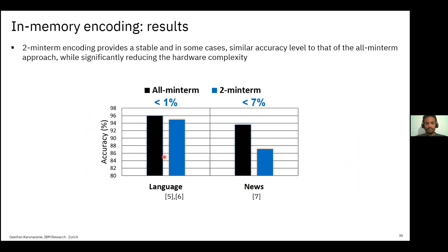Using this approximation method, we ran experiments on datasets. On a language dataset with 22 languages and 21,000 query sentences, we observed only a 1% accuracy drop. On a news categorization dataset with 8 categories, the accuracy drop was about 7%, likely due to the skewed data distribution.